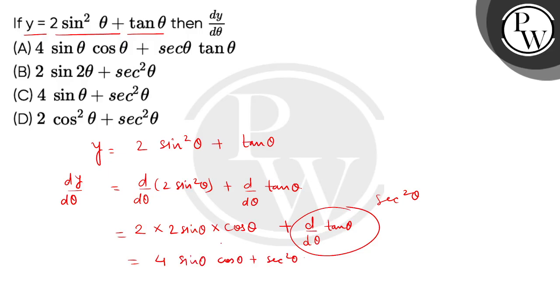अब बच्चों, यहां से एक alternate हम expression ले सकते थे, 2 sin theta cos theta को हम express कर सकते थे, sin of double angle, multiple angle. So यहां से हमें answer मिल जाएगा, 2 sin 2 theta, plus sec square theta.